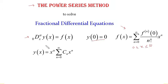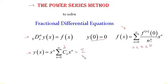Our primary task is to find the unknown function y(x) in the fractional differential equation. I assume that y(x) can be written as a power series: x to the power alpha times the summation from n=0 to infinity of c_n times x to the power n, where c_n are constants to be determined. This can be written as the summation from n=0 to infinity of c_n times x to the power n plus alpha. Once I have those constants I plug them in and this is the power series solution.